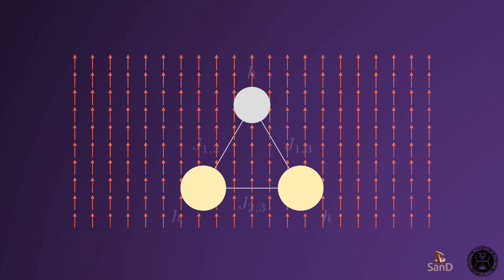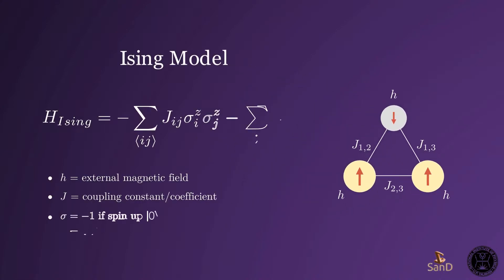We have H for the external magnetic field and J for the coupling coefficient between particles. Each particle has a spin, which will change depending on configuration stability and energy. This energy is given by the Hamiltonian, and this magnetic model is known as the Ising model.